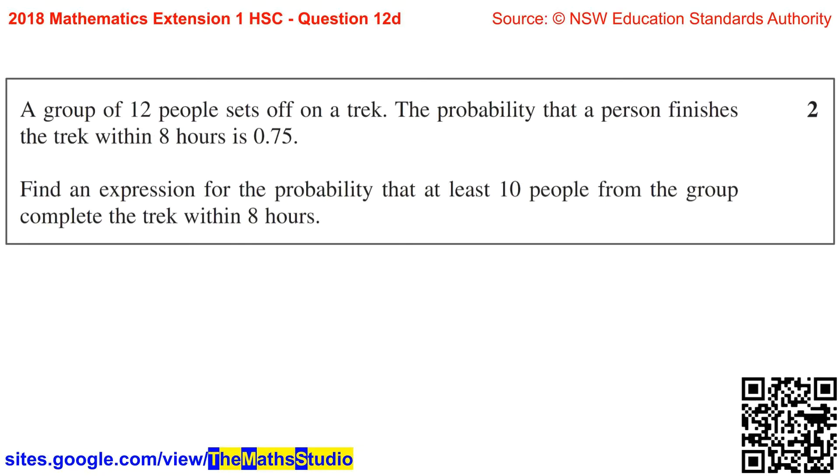Question 12d: A group of 12 people sets off on a trek. The probability that a person finishes the trek within 8 hours is 0.75. Find an expression for the probability that at least 10 people from the group complete the trek within 8 hours.